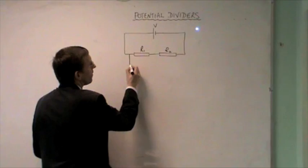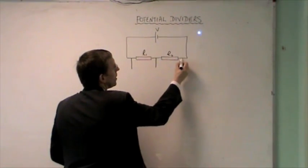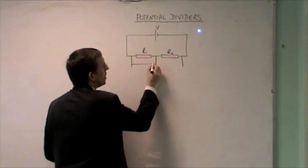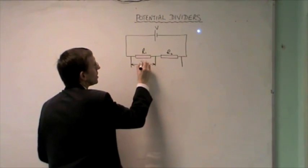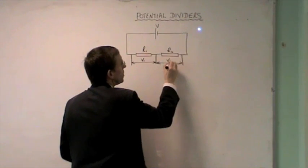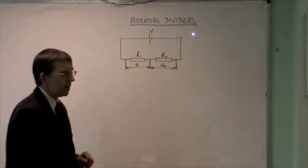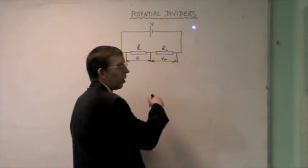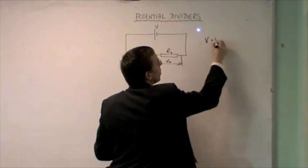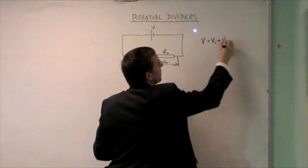The potential difference provided by the source is split between the two resistors. V1 there, V2 there, where we know from Kirchhoff's rules that V must equal V1 plus V2.